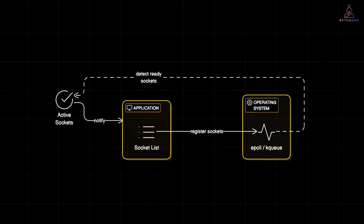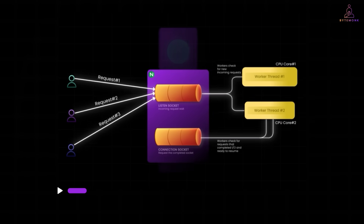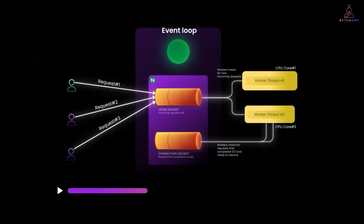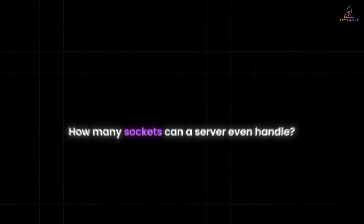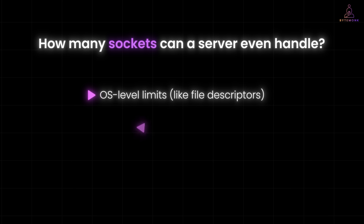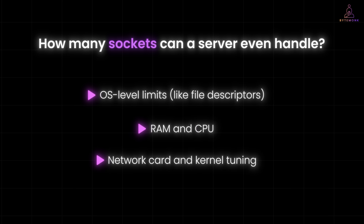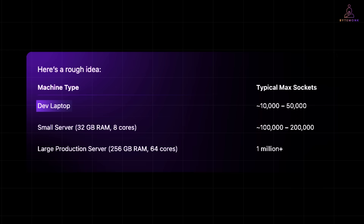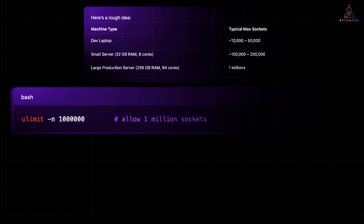This is the backbone of how modern high-performance servers scale. Take a server like Nginx — it uses a tiny set of event loop workers powered by ePoll or KQueue. Only the ready sockets, the ones with real traffic, get processed. Instead of checking every line constantly, it only picks up the ones that are ringing. How many sockets can a server even handle? Technically a lot, but it depends on OS-level limits like file descriptors, RAM and CPU, network card, and kernel tuning. For a dev laptop it's around 10,000 to 50K. For small servers with 32 GB RAM and 8 cores, about 100K to 200K. For large production servers with 256 GB RAM, it could be up to 1 million. In real-world production, admins usually tune this using the ulimit command and set kernel parameters.